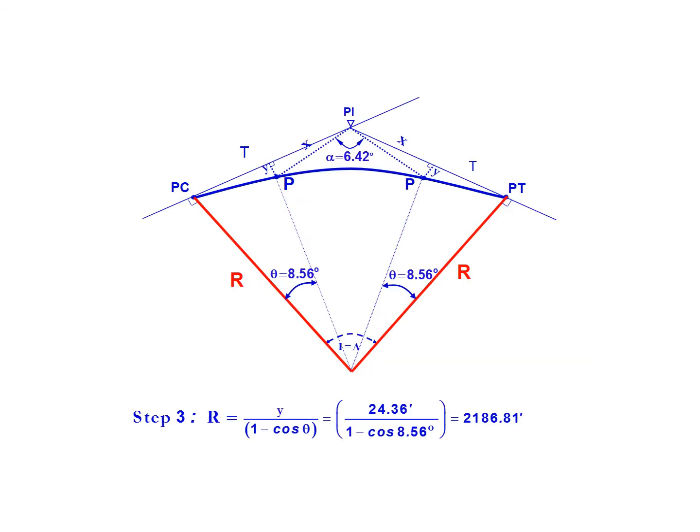The final step is to solve for the radius: Y divided by 1 minus cosine of theta. So 24.36 feet divided by 1 minus the cosine of 8.56 degrees gives us a radius of 2,186.81 feet.